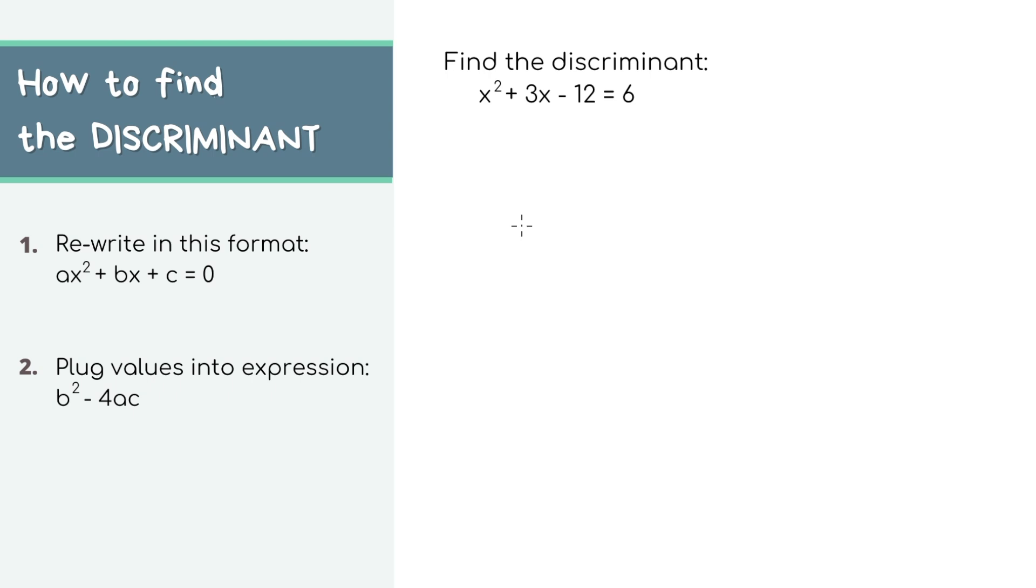In order to find the discriminant, we'll first need to put the equation in standard form. For our example, we're almost there, but we have that 6 on the right side when it's supposed to be 0. So to get rid of it, I'll just subtract 6 from both sides of the equation.